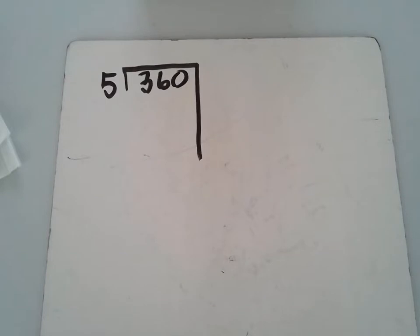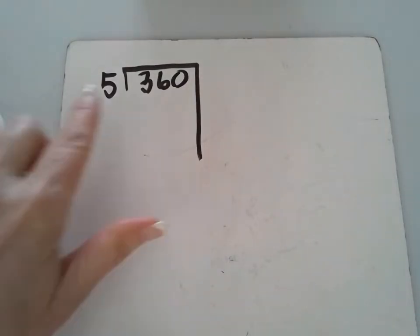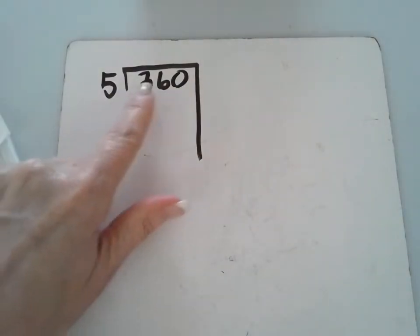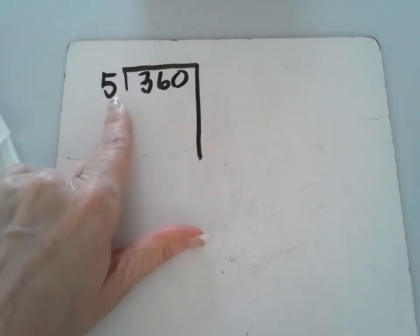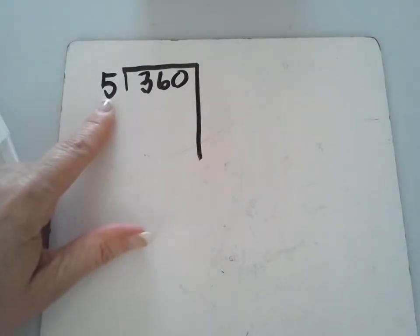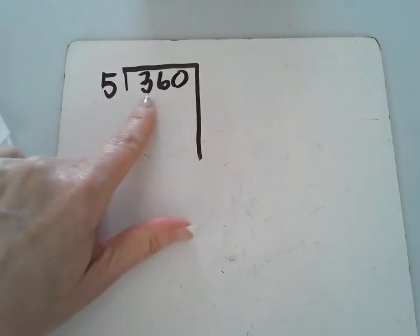Okay, so I have a one digit and then I have a three digit number that's being divided by the one digit number. This number here is going to be my divisor and this number here is going to be my dividend.